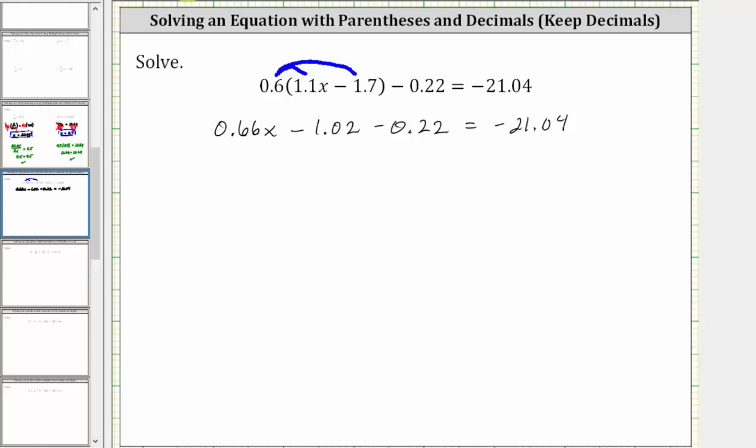Still simplifying on the left side, we can combine the two constant terms here. Negative 1.02 minus 0.22 is equal to negative 1.24, giving us 0.66x minus 1.24 equals negative 21.04.